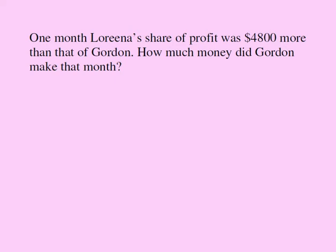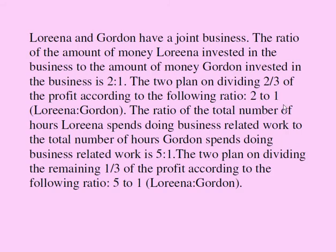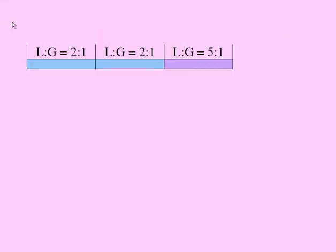I'm going to paraphrase the question before we look at the solution. Two thirds of the profit will be divided in the ratio of 2 to 1. And the remaining one third of the profit will be divided in the ratio of 5 to 1 between Lorena and Gordon. So this is a summary of what we gleaned from the first part of the question. Two thirds of the profit and one third of the profit. This is profit.